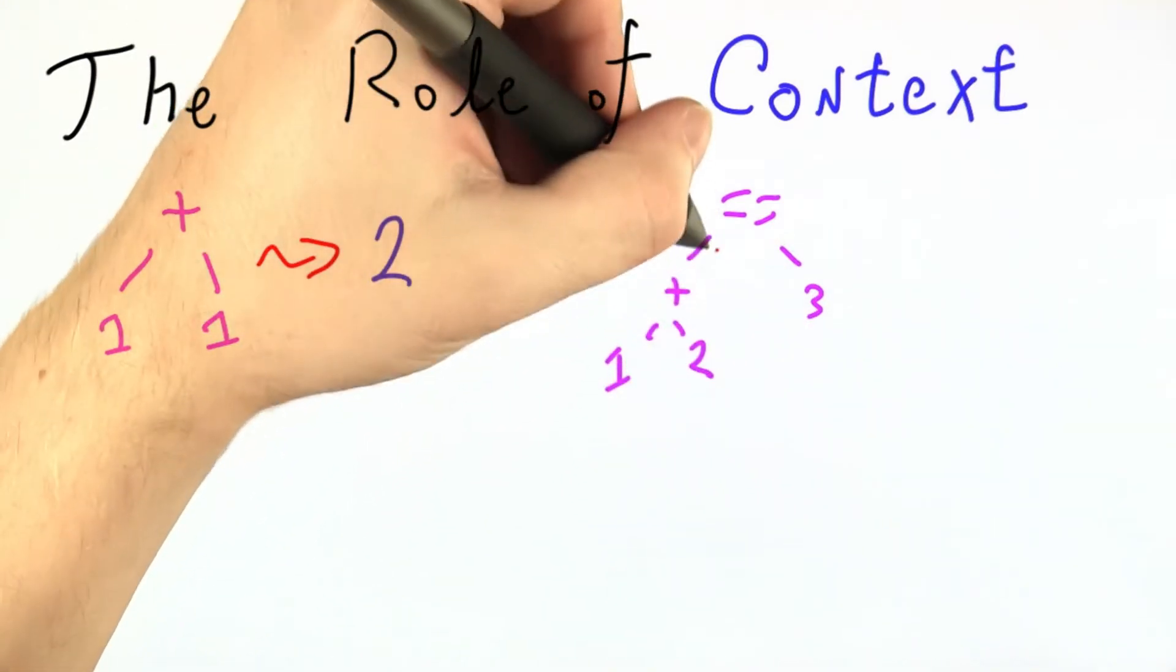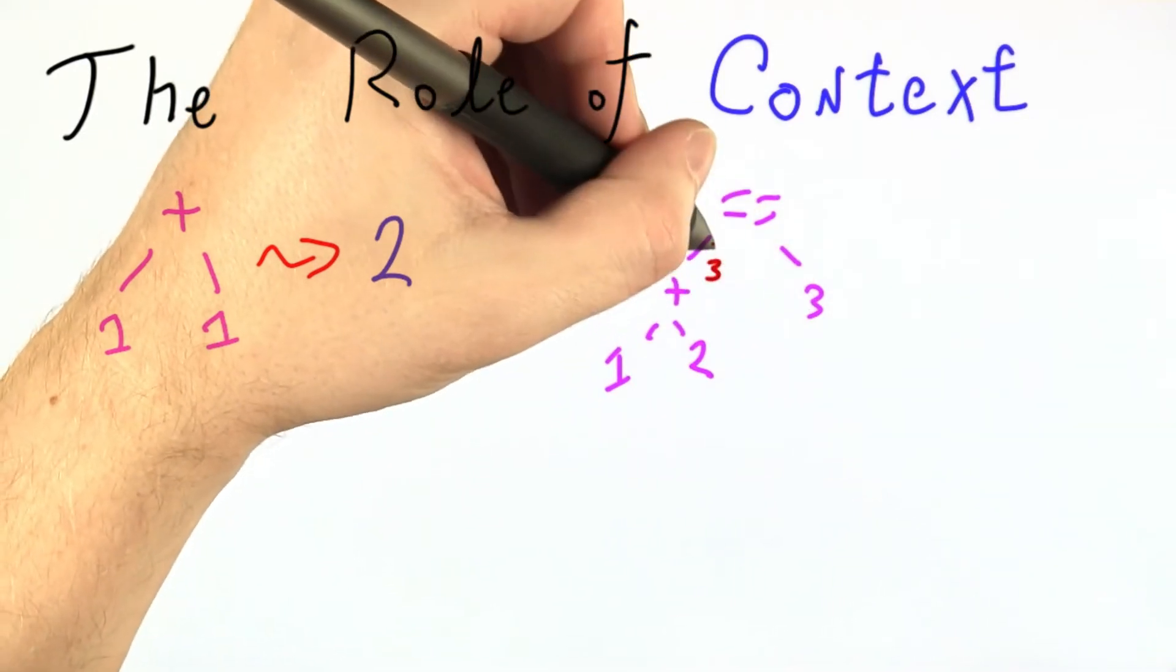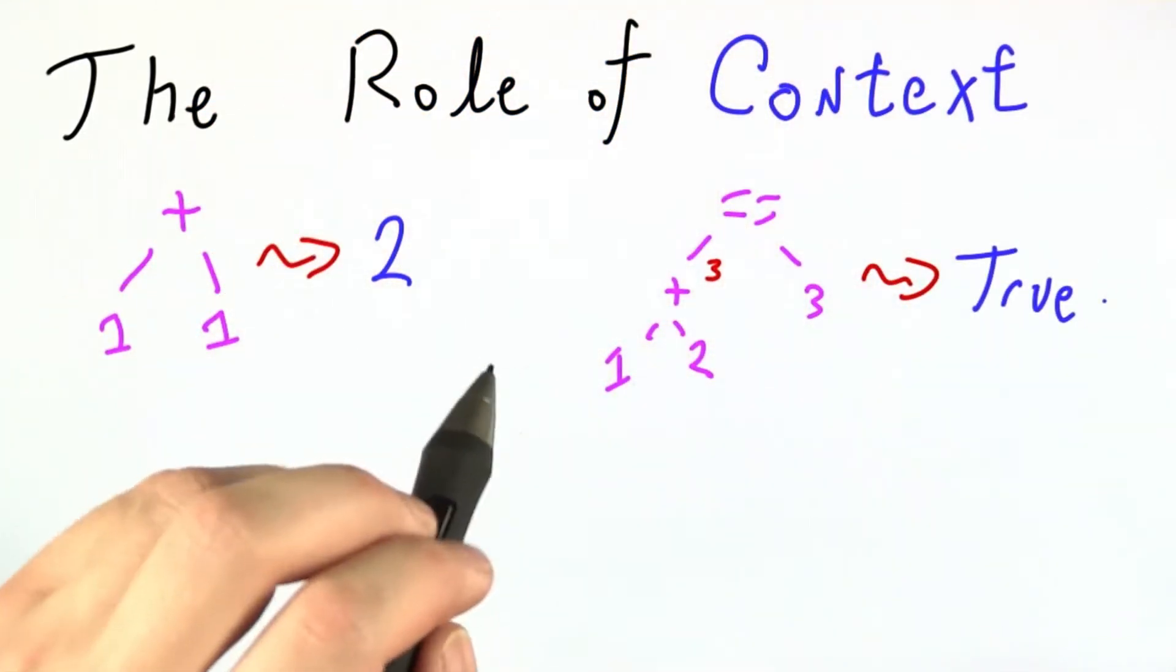We can imagine evaluating this part recursively and getting the answer 3, and then deciding that 3 is equal to 3, so this whole thing evaluates to true.